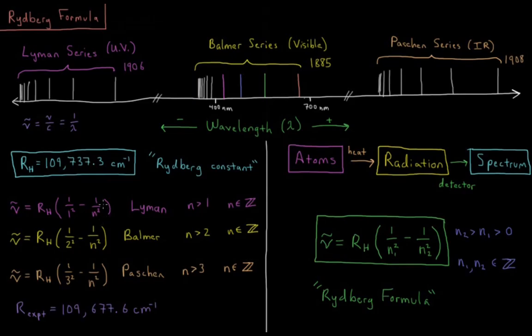Each of them thought, what can predict the location of these various lines? For Balmer, he found that if you do some constant times 1 over 4, or 1 over 2 squared, minus 1 over n squared, where n is some integer greater than 2...